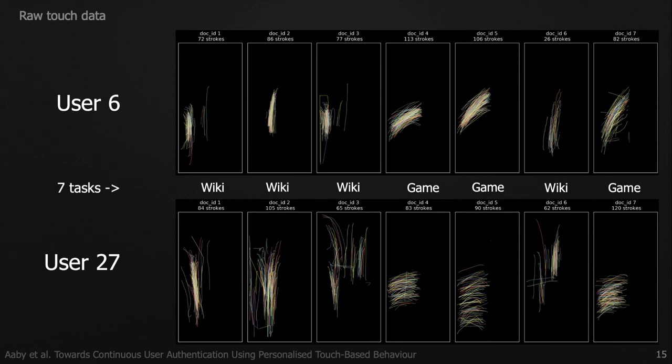On this slide, we present the raw user input from two users that carried out seven different tasks. The data is a subset of the public Touchalytics dataset collected by Frank et al. The first three tasks from the left are recorded in the first week, together with two games also collected in the first week. The last two — one article and one game — were played with up to seven days between the first observations. Since we are interested in performance over time, qualifying users must provide data over time, which reduces the original dataset from 41 users to 12 suitable users.